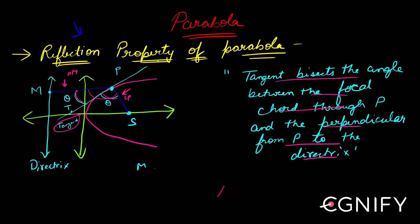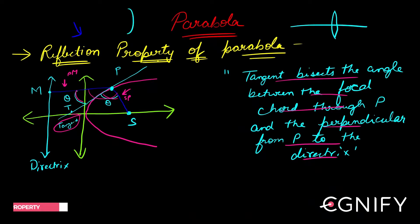Because of this property, in lenses or mirrors which behave nearly as a parabola, a ray which comes parallel to the principal axis reflects and passes through the focus. You would have already studied this. These mirrors nearly behave as a parabola — let's see why that happens.